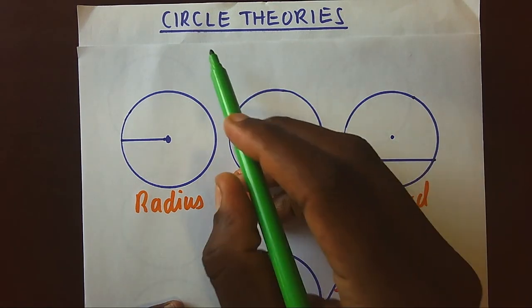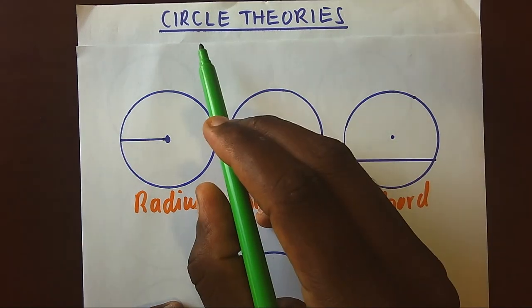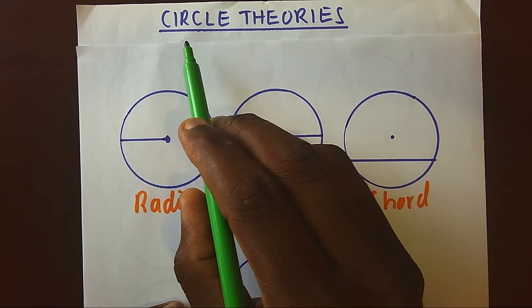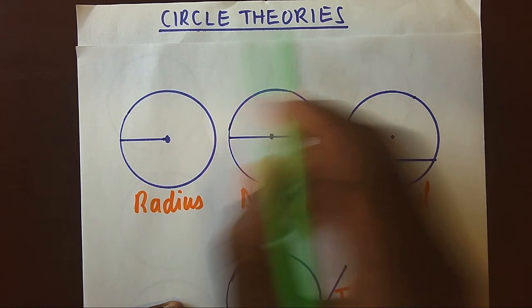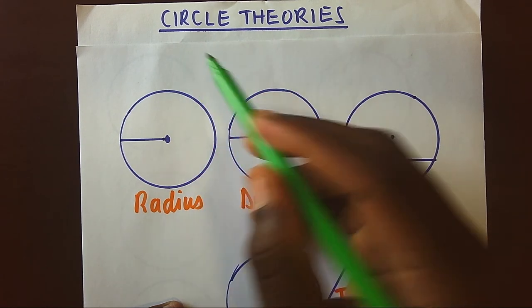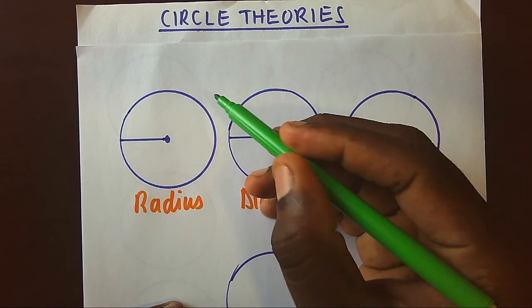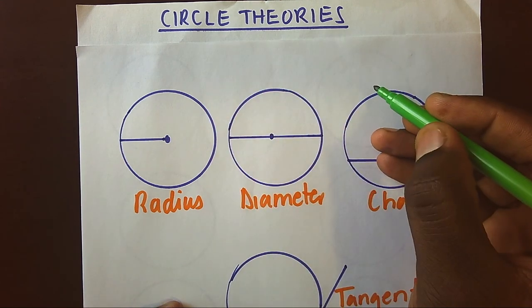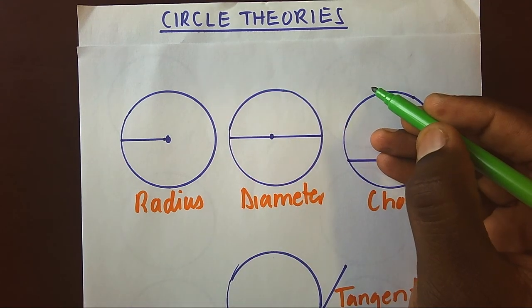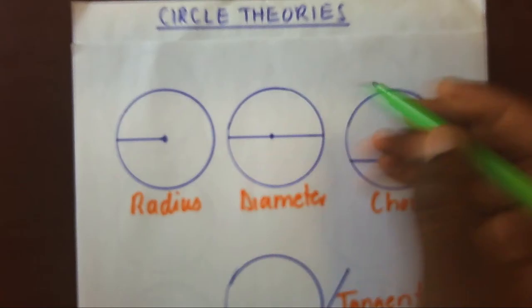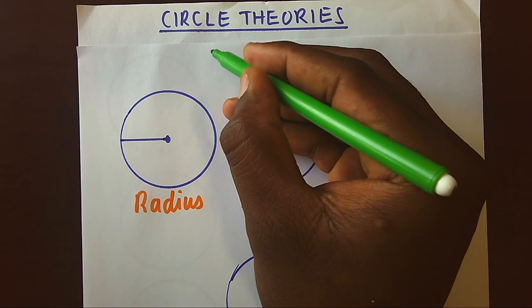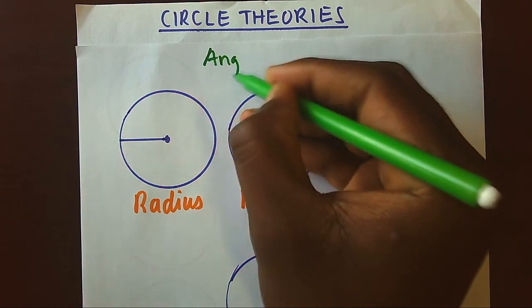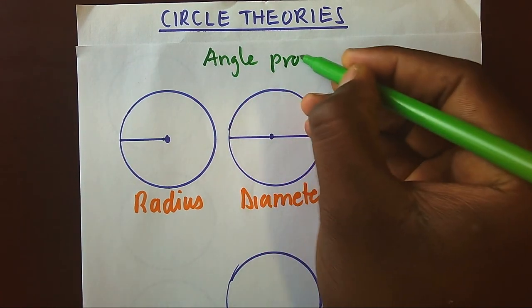We are looking at theories of circles that we call circle theories. Circle theories is also under what we call angle properties.